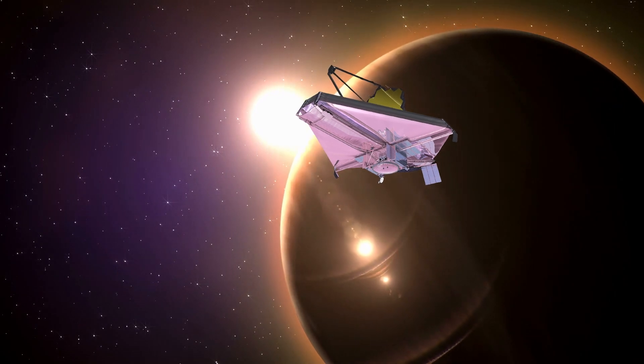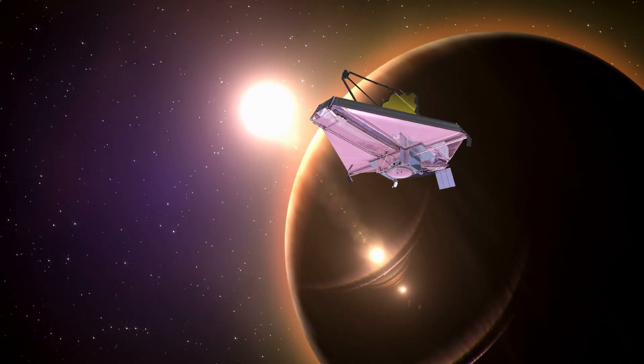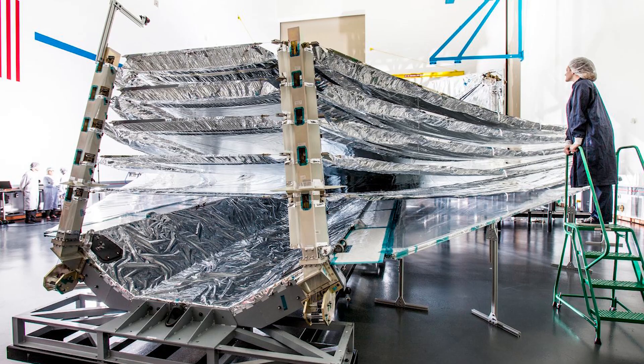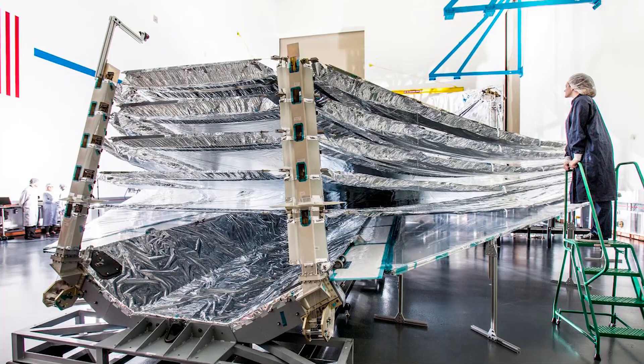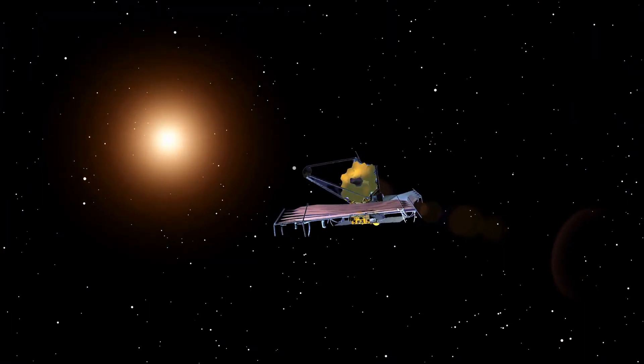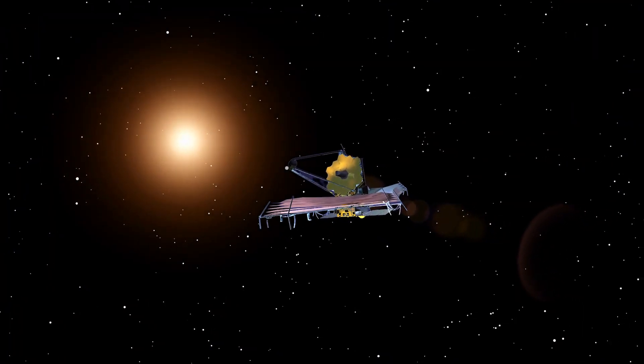The sunscreen is like the size of a tennis court and is shaped like a kite. Hence, the telescope may be shielded from the sun. Each layer has a vacuum gap between them, so that its efficiency can be improved. Aside from that, each layer is coated with aluminum. A covering of doped silicon covers the two layers nearest to the sun.